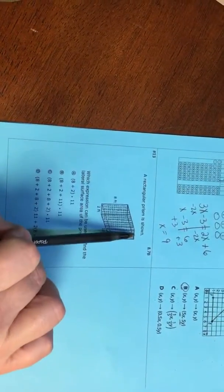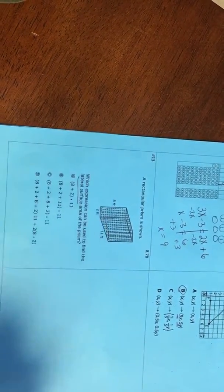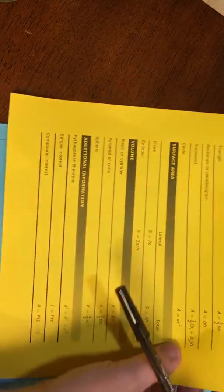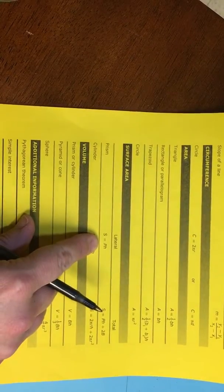All right, number 13. A rectangular prism is shown. Which expression can be used to find the lateral surface area of the prism? So you're going to need your formula chart, and it's a prism, and it's lateral. So it's going to be perimeter of the base times the height.